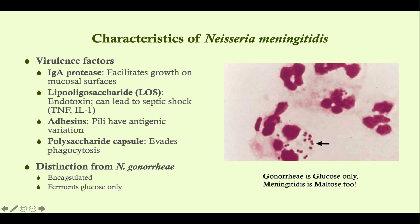The distinction from Neisseria gonorrhea is that meningitidis is encapsulated and that it ferments glucose and maltose. Gonorrhea ferments glucose only — think GG (Gonorrhea, Glucose). Meningitidis ferments maltose too — think MM (Meningitidis, Maltose). So: gonorrhea, glucose only; meningitidis, maltose and glucose.